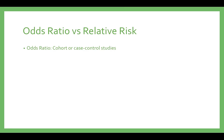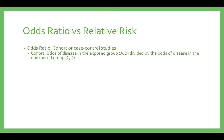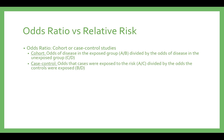In a cohort study, the odds ratio is calculated by dividing the odds of experiencing the event in the exposed group — A divided by B — by the odds the unexposed group experiences the event — C divided by D. In a case-control study, the odds ratio is calculated by dividing the odds that cases were exposed to the risk — A divided by C — by the odds that the controls were exposed — B divided by D.